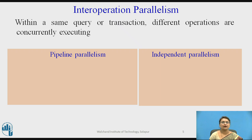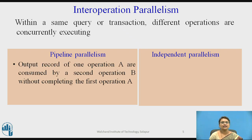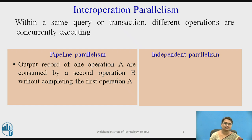In inter-operation parallelism, multiple operations are parallelized and it has two forms: pipeline parallelism and independent parallelism. In pipeline parallelism, it works like a producer and consumer — one operation is executing and the result of that operation is provided to another operation as input. The second operation is not waiting for the first operation to complete.